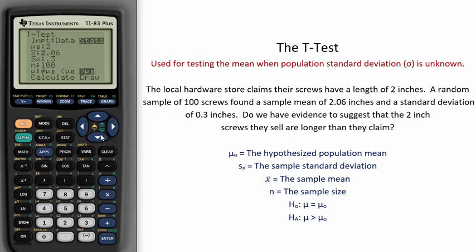Here we have the sample mean, 2.06, and the sample standard deviation, 0.3. It is important to note that this is the sample standard deviation that came from 100 screws and is not the population standard deviation, which is unknown in this problem.